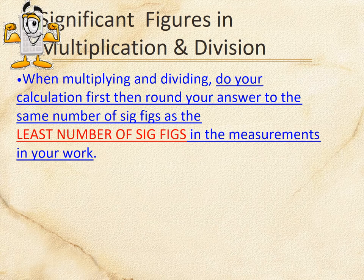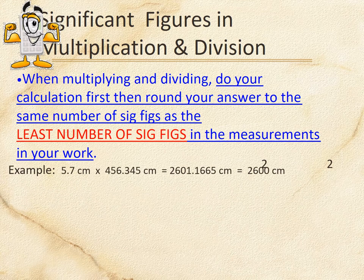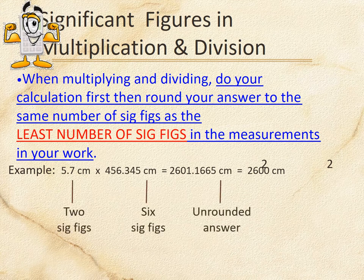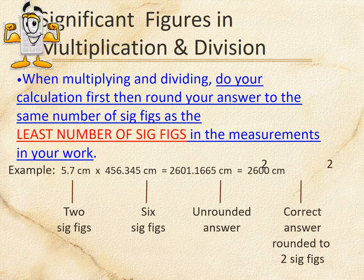For multiplying and dividing, you use the number of sig figs rather than decimal places. Your answer can only have as many sig figs as the number with the least sig figs. For example, 5.7 has two sig figs and 456.345 has six, so your answer can only have two sig figs. The unrounded answer rounds to 2,600 centimeters squared — two sig figs.